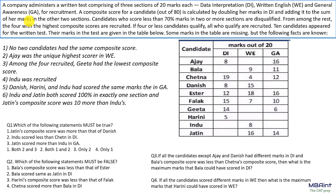Welcome. This is a very good question of data interpretation from CAT 2018. A company administers a written test comprising three sections of 20 marks each: Data Interpretation, English, and General Awareness. A composite score out of 80 is calculated by doubling the marks in DI and adding them to the sum of marks in the two other sections. Each section is of 20 marks, so the total is 80 marks.